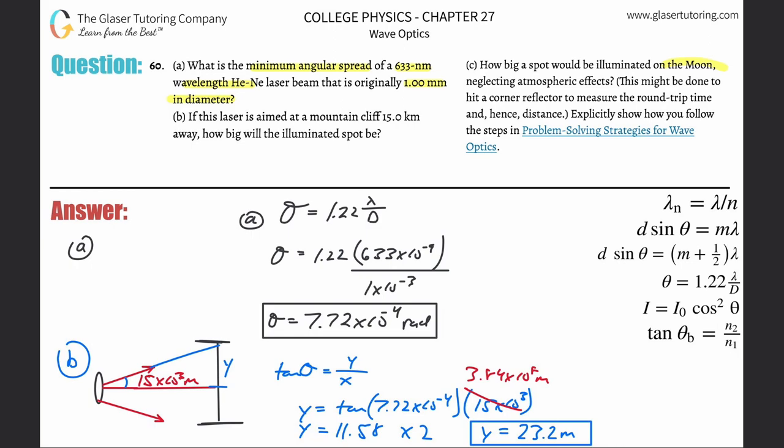Take that value that you found before, take the tangent of that particular angle, the 7.7226 times 10 to the minus four. Remember radian mode, multiply by 3.84 times 10 to the eight, but then you're going to have to multiply that by two. So the answer then would become 5.93 times 10 to the fifth. And that's going to be in terms of meters. That would be the answer to letter C.